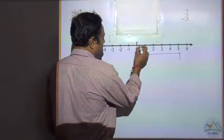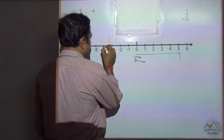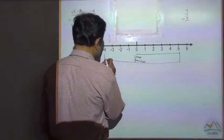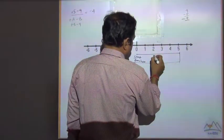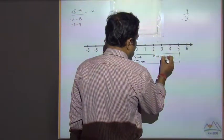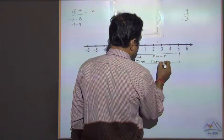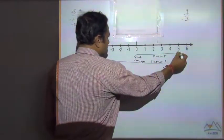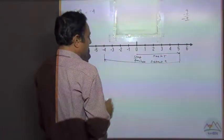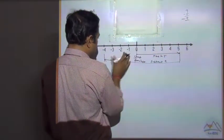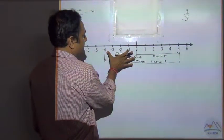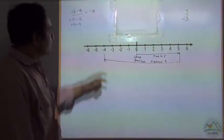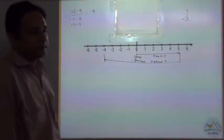Count back 9 steps: 1, 2, 3, 4, 5, 6, 7, 8, 9 — and you reach here. So you moved from 5 and subtracted 9. The answer is now count from 0 — the answer is minus 4. This is the way you can solve this question on the number line.